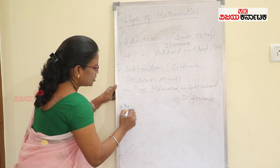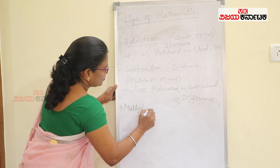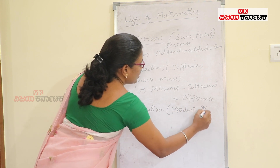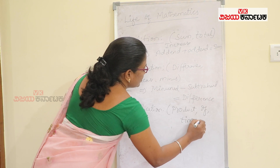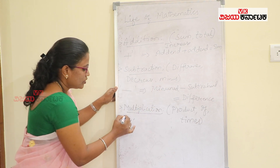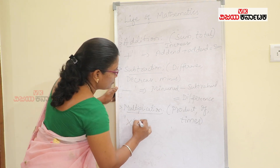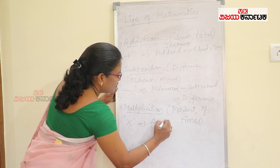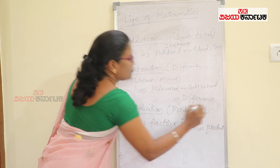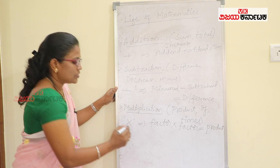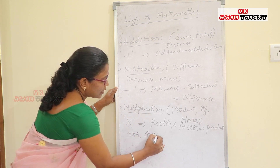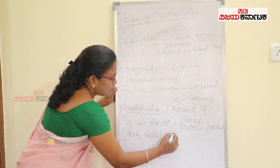Next, multiplication. The key terms are product and times — meaning how many times a number has been multiplied. The symbol can be written as ×, or using the word 'into.' The rule is: factor into factor gives you the product. For two numbers a and b, we can write a × b, or a(b), or simply ab.